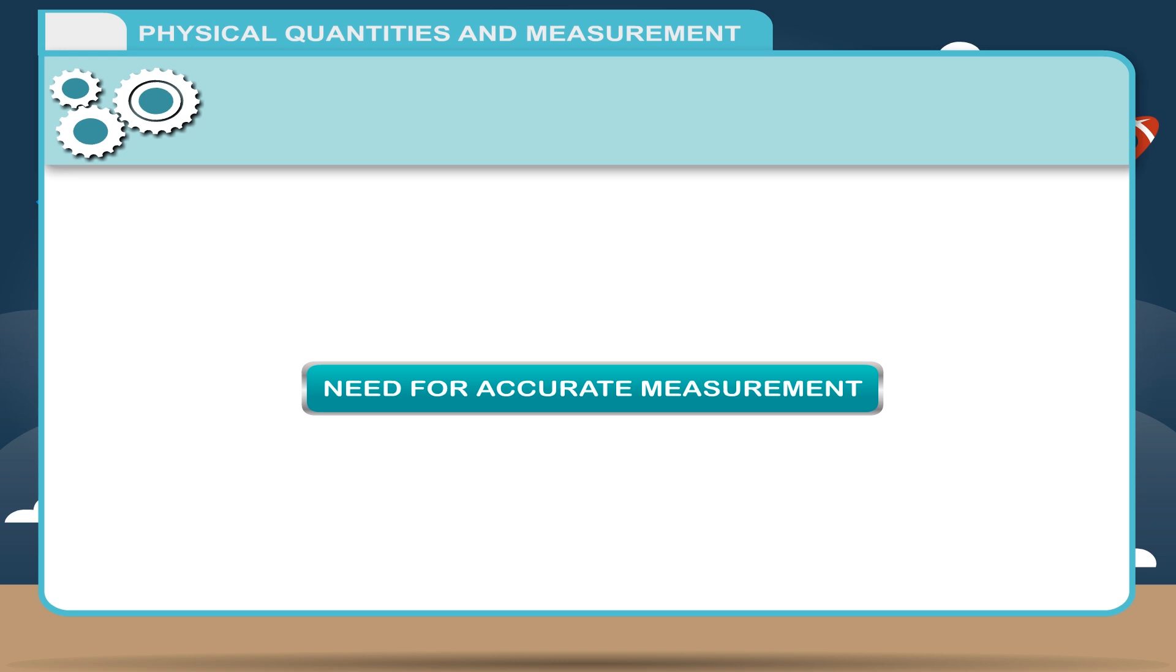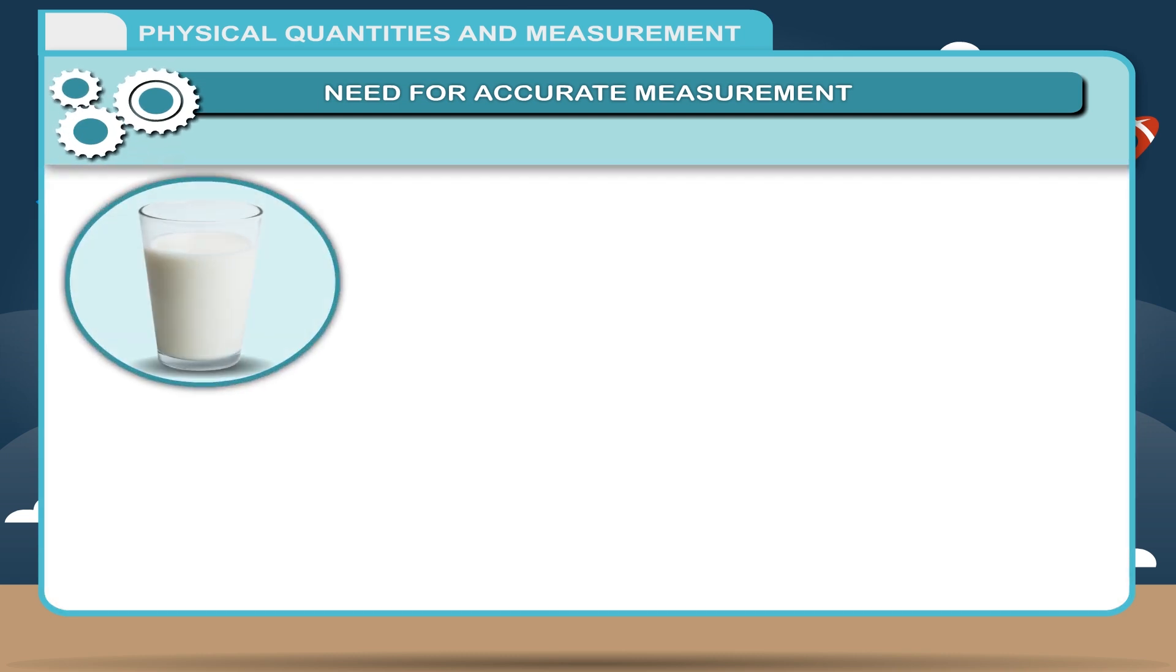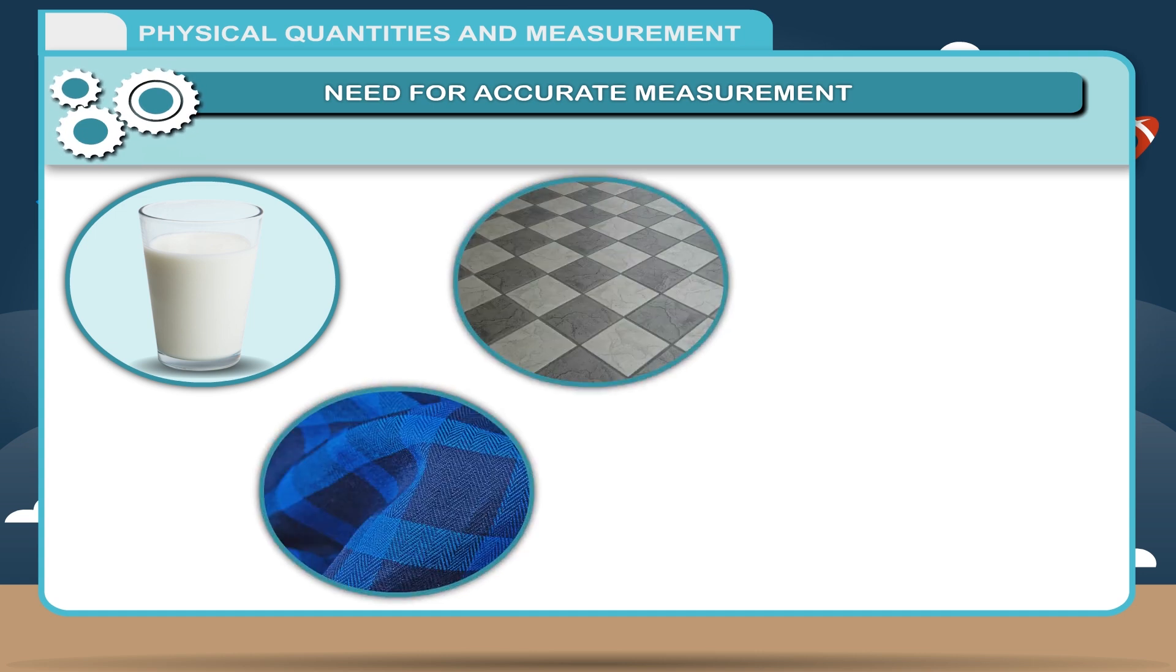Need for Accurate Measurement: To know the correct mass, volume and length of an object, we must measure these physical quantities accurately. We purchase milk by volume, cloth by length, floor tiles by area, timber wood by volume and fruits and vegetables by mass.